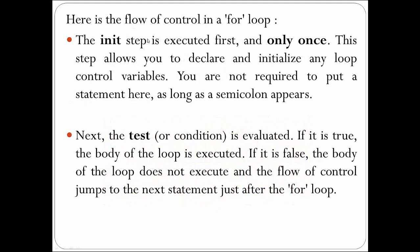Let's understand the flow of control in a for loop. The first step is the init step, also called initialization. The init step is executed first and only once. This step allows you to declare and initialize any loop control variables. You are not required to put a statement here as long as a semicolon appears. Once the initialization is done, the test condition is evaluated.